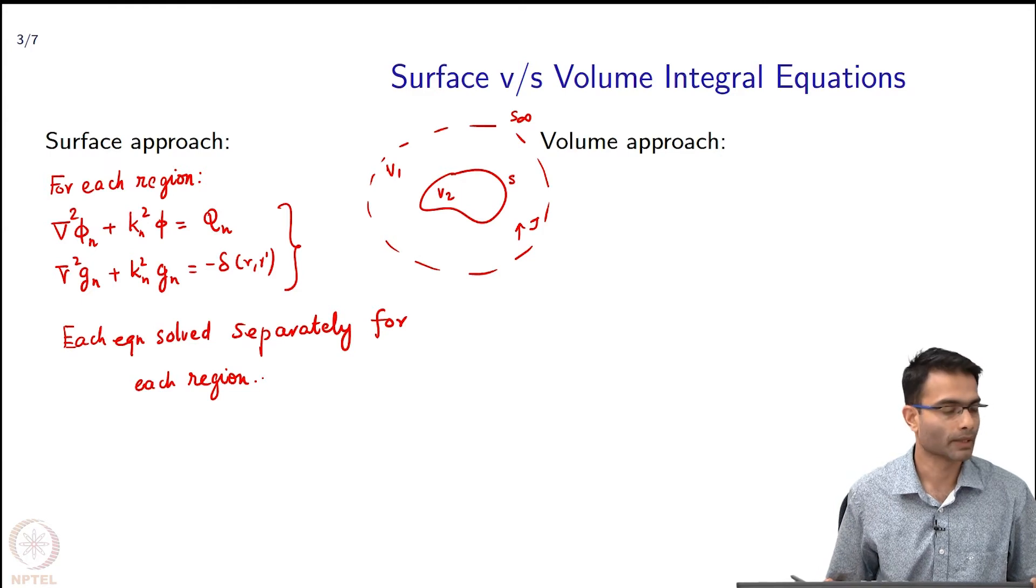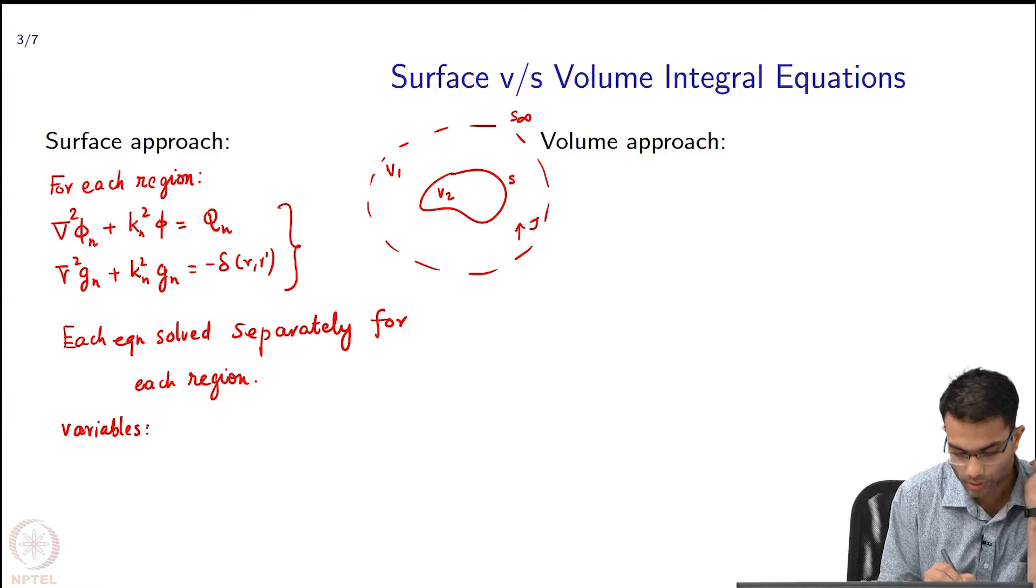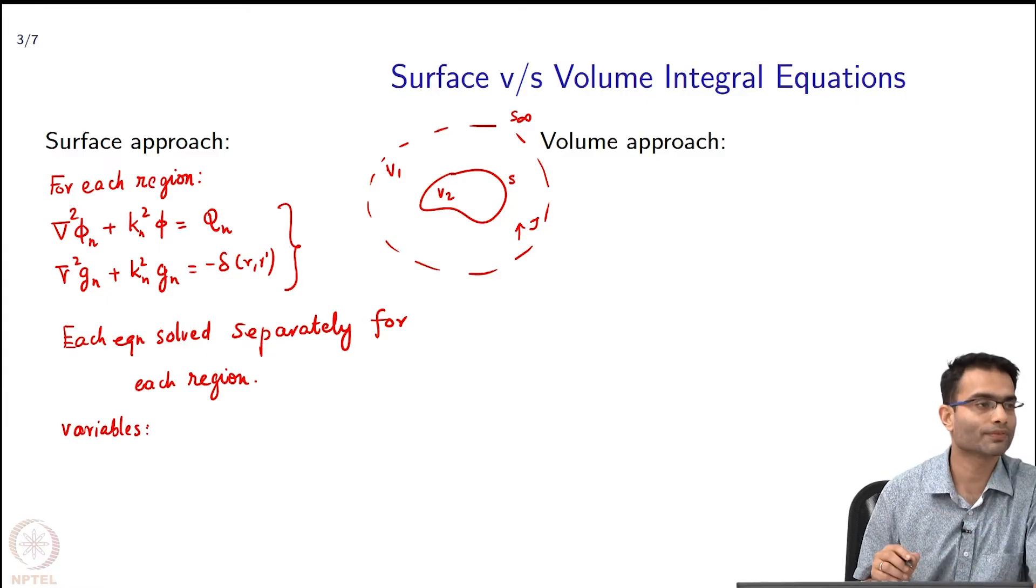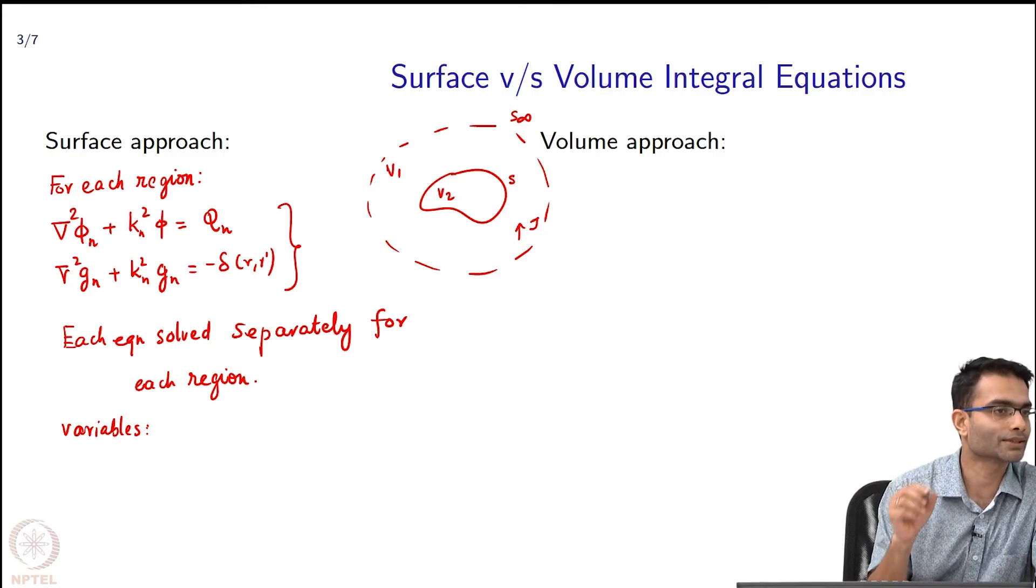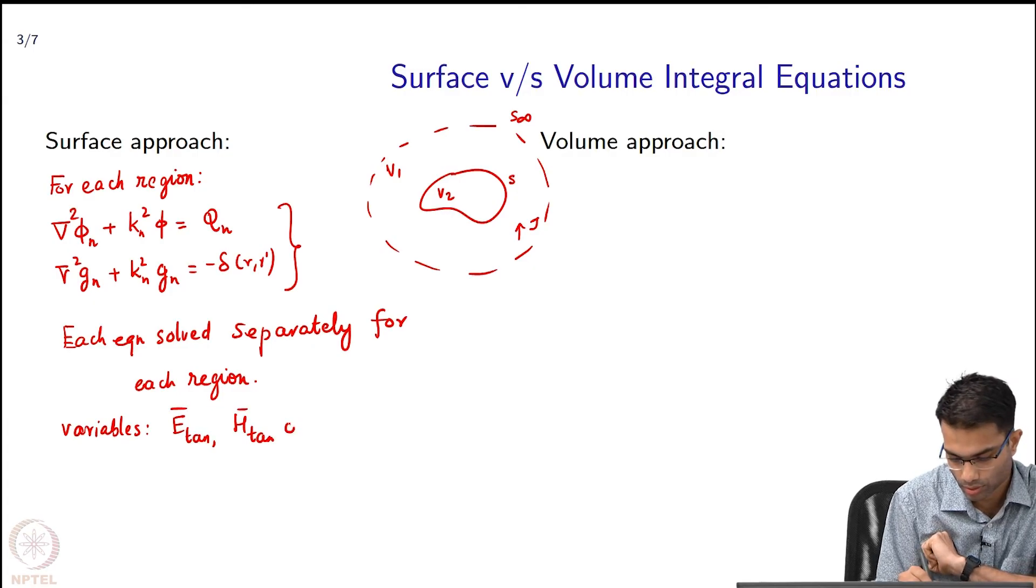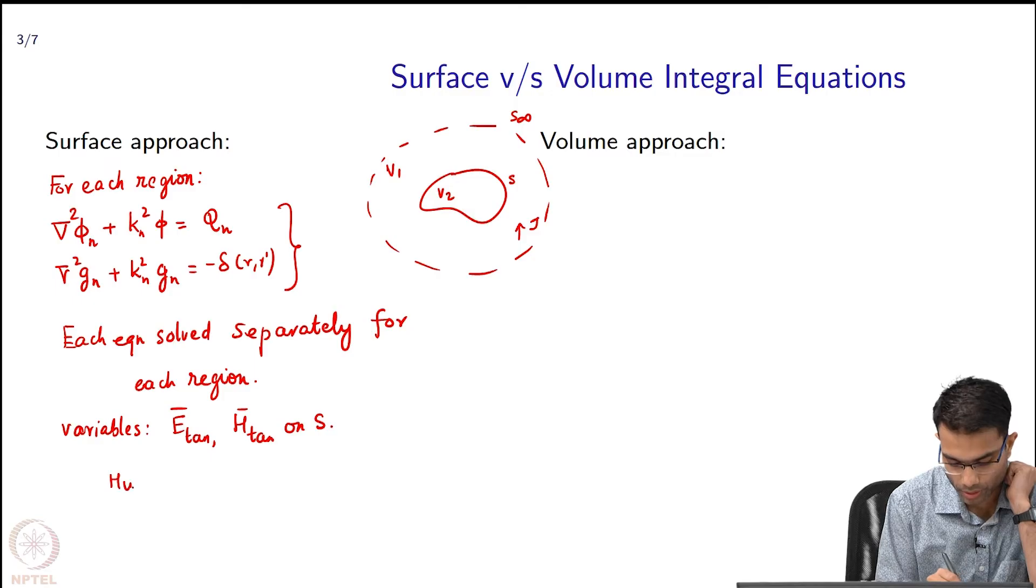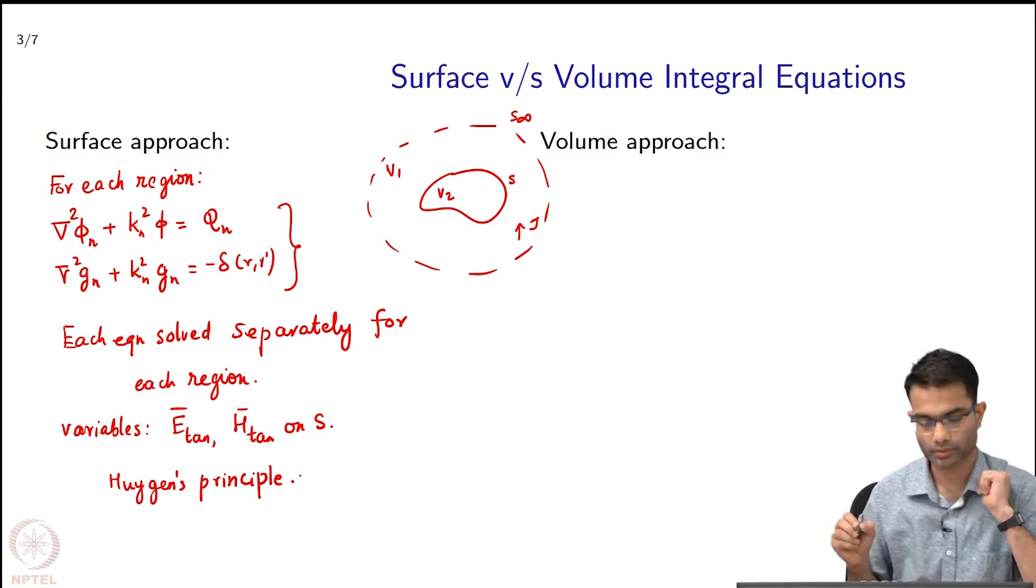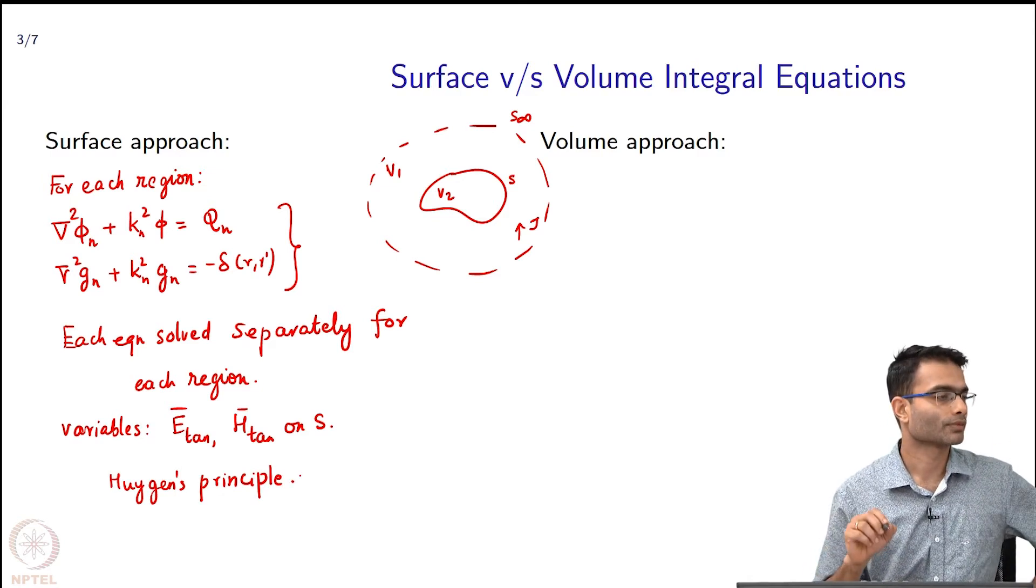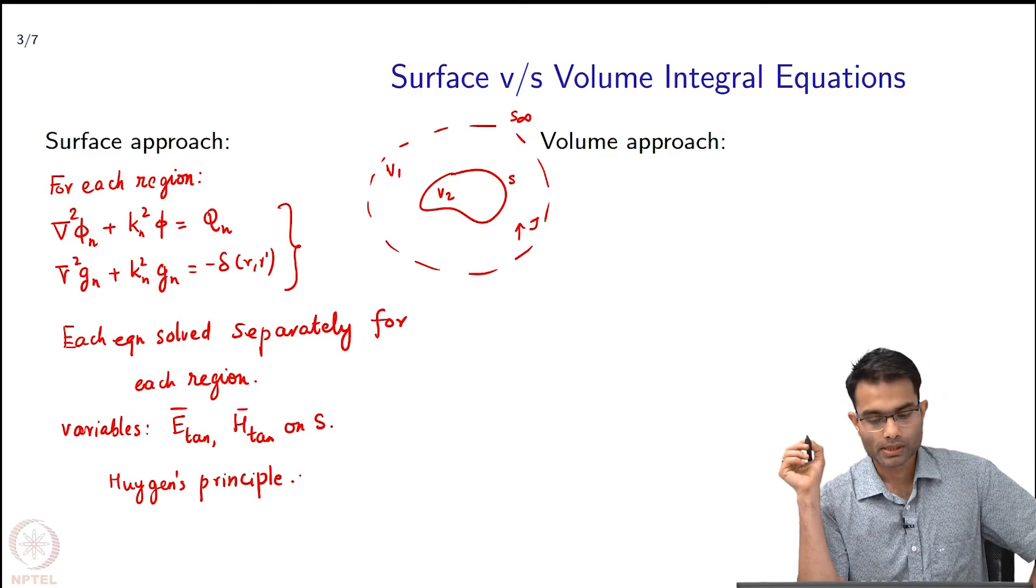That is what we did and our variables were the E tangential and H tangential on S. Finally, once we solved for it we use the Huygens principle to find the field anywhere. This is kind of like a revision of the surface integral approach.